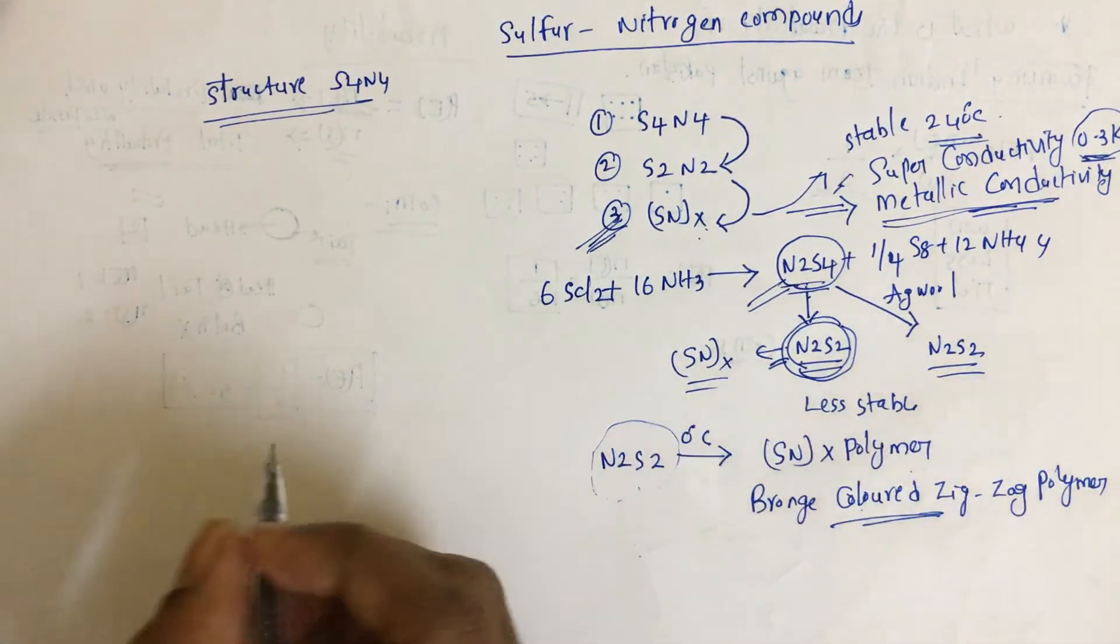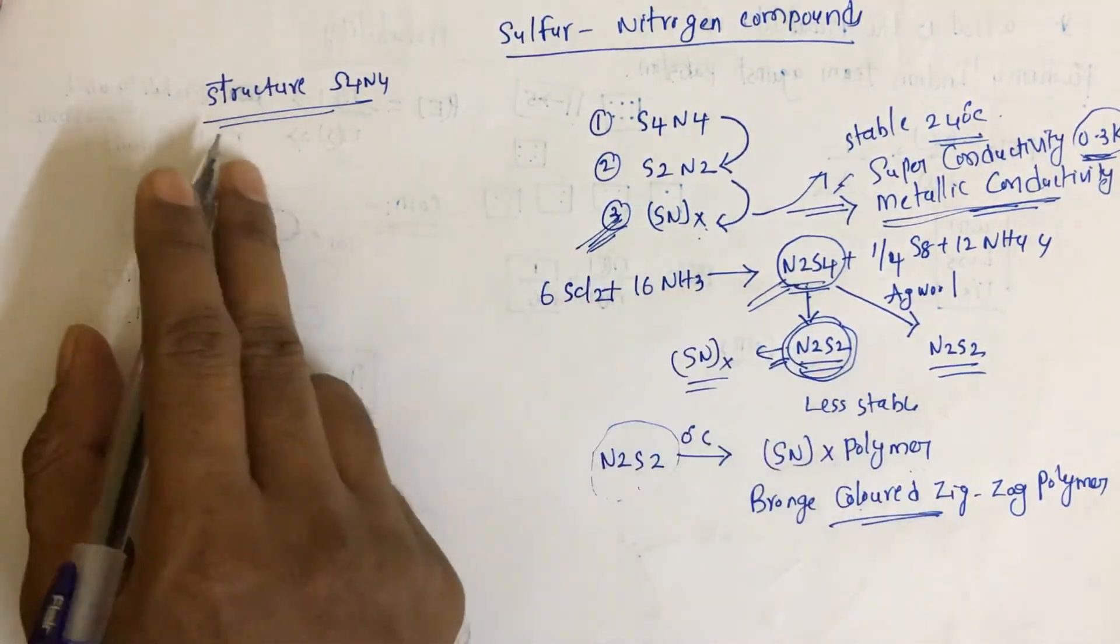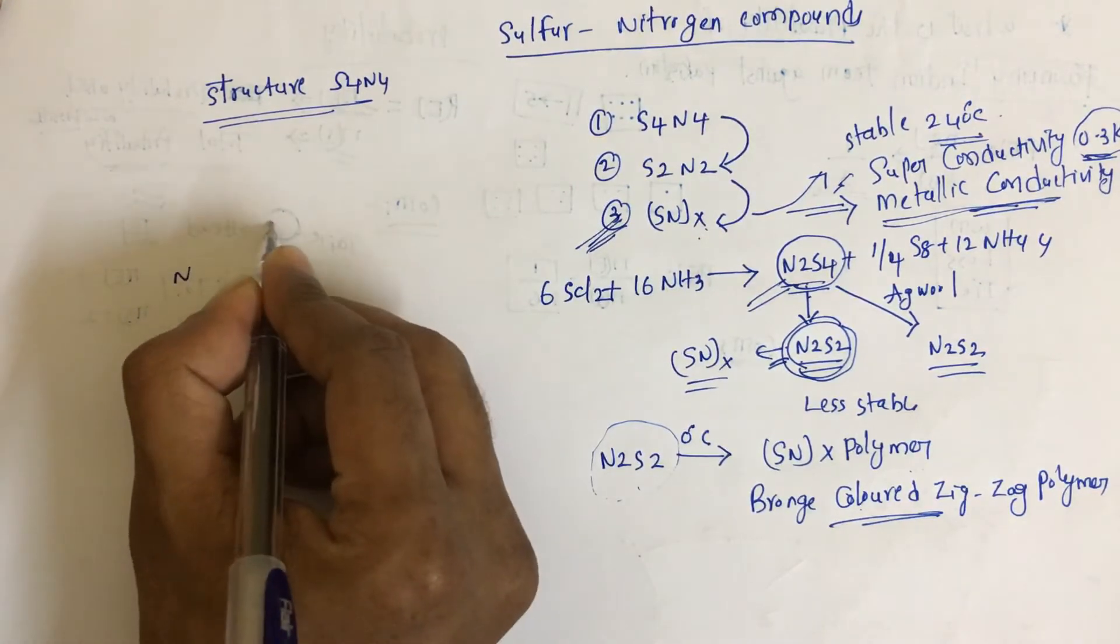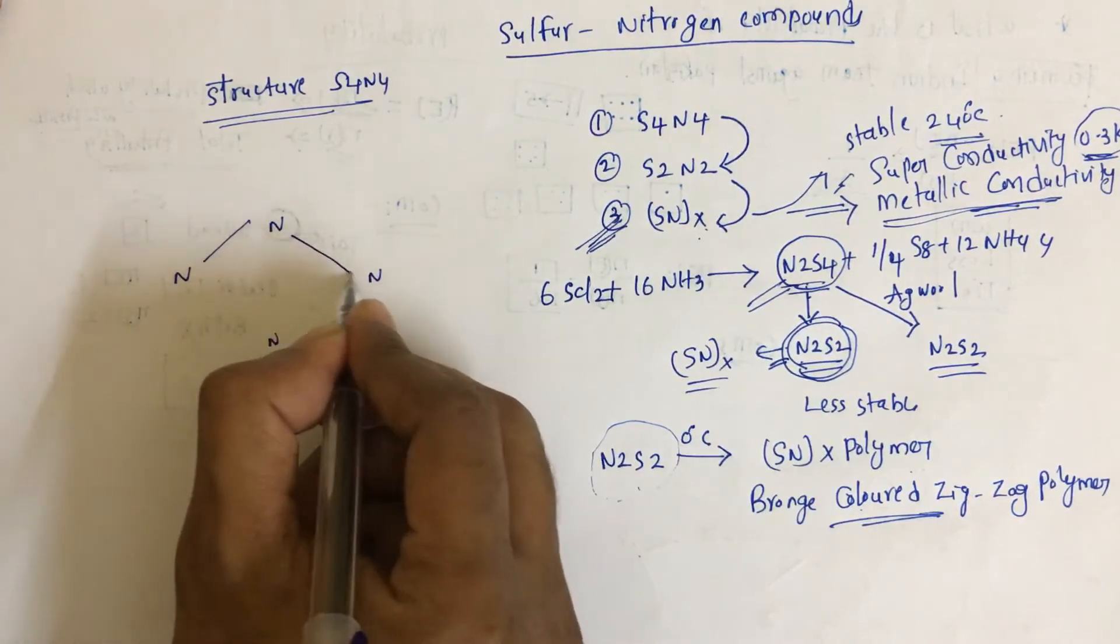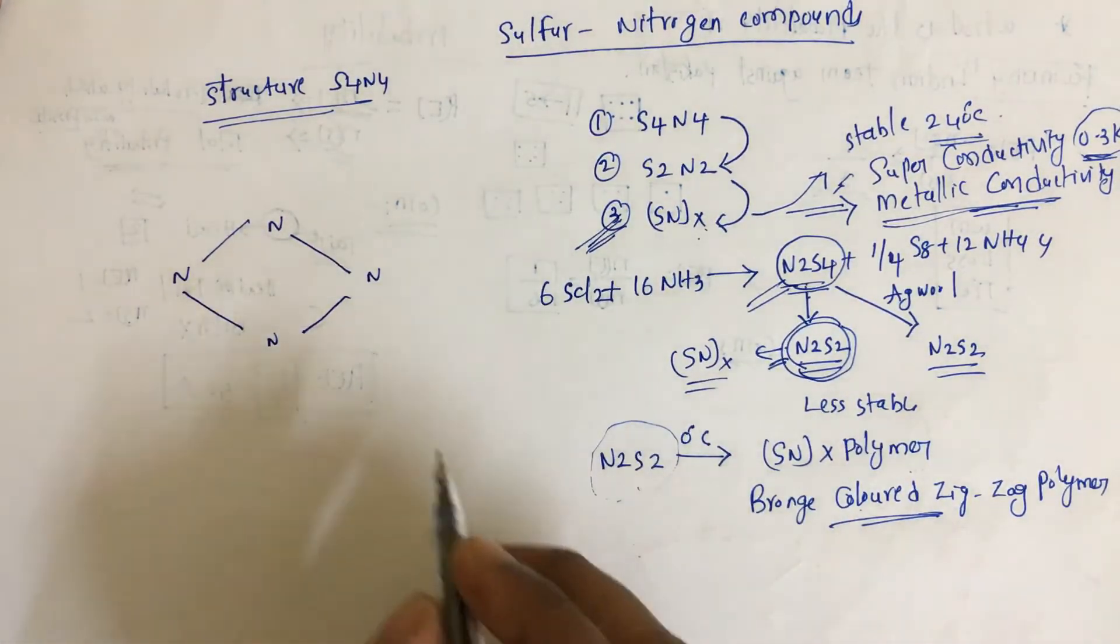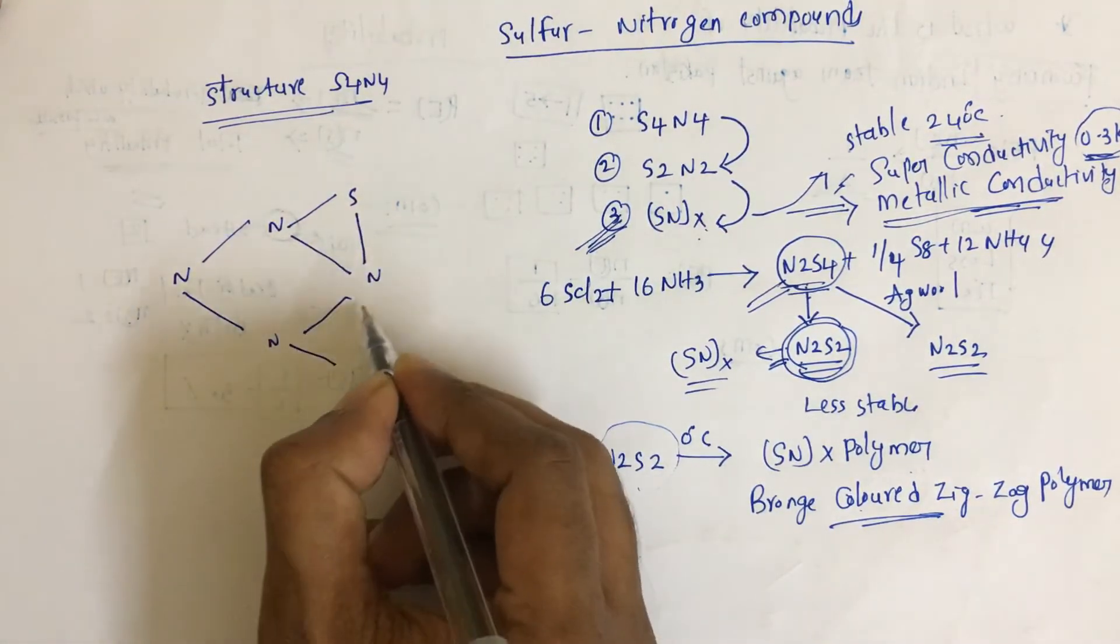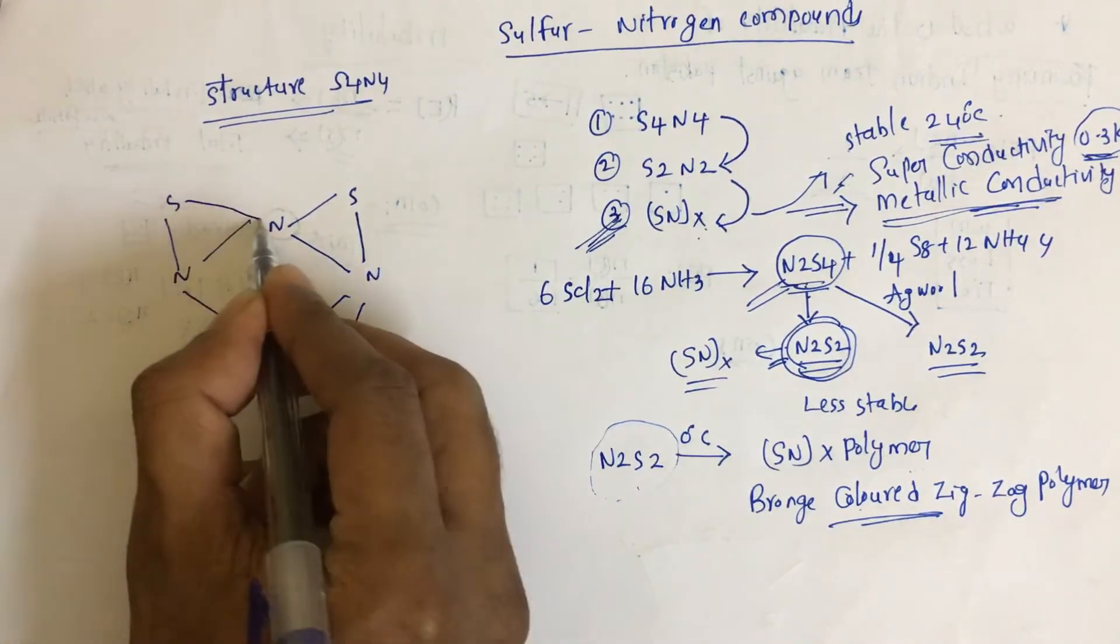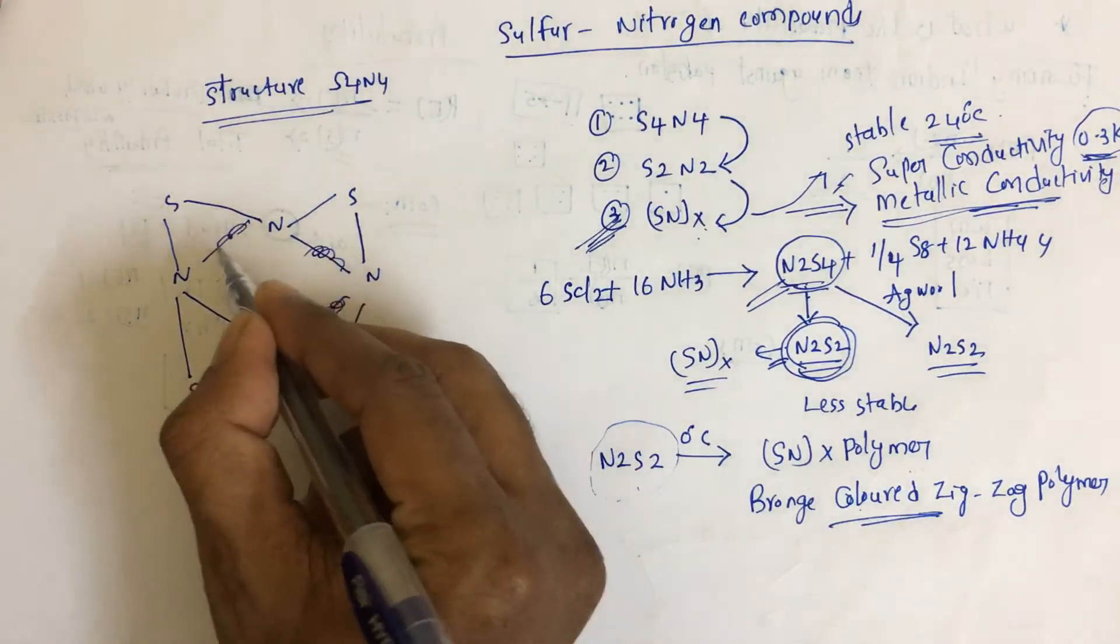First we will talk about the S4N4 structure. Here all four nitrogens are in the plane, like this. Each nitrogen is connected by one sulfur. Two sulfurs are above, two sulfurs are below. This is the structure of S4N4.